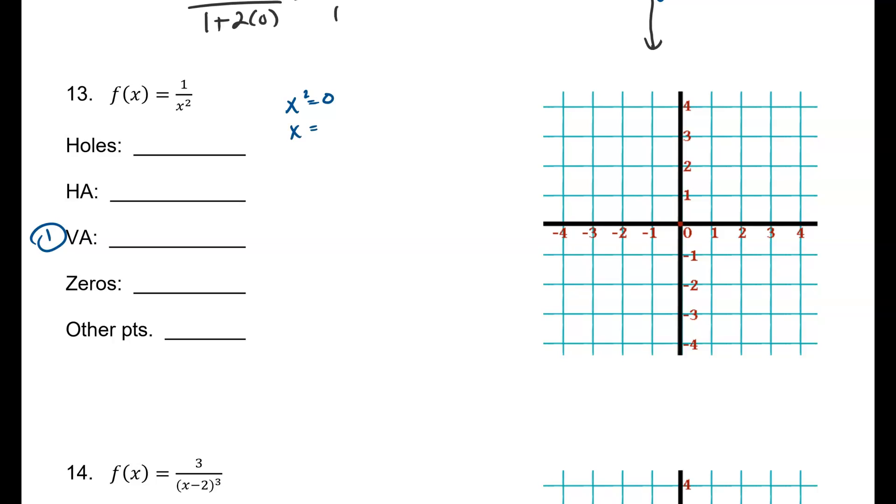Take the square root of both sides. It's going to be 0, right? So my vertical asymptote is at x is equal to 0. And so it's going to be right here along my y-axis.